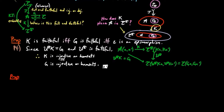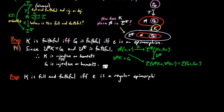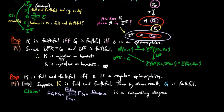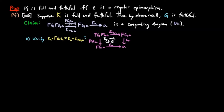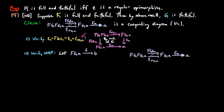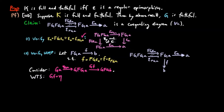The more interesting statement is the following: the comparison functor K is full and faithful if and only if the co-unit epsilon is a regular epimorphism. To prove the forward direction, we suppose K is full and faithful. We claim that the diagram is the co-equalizer diagram for each object A. To show this, we first verify that epsilon_A ∘ FG(epsilon_A) is equal to epsilon_A ∘ epsilon_{FGA}. This follows from the naturality square for the co-unit epsilon. Second, we need to show that epsilon_A enjoys the universal mapping property of the co-equalizer. So we let F be a morphism co-equalizing FG(epsilon_A) and epsilon_{FGA}. We consider the morphism eta_{GA} followed by GF.